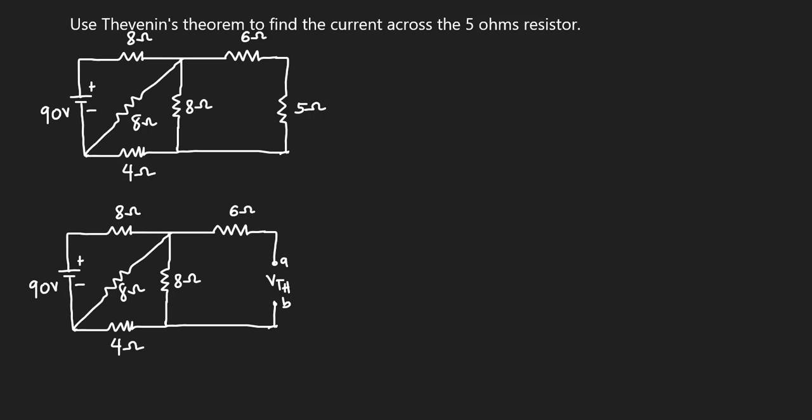Hello, welcome to this lesson. In this video you are going to solve this question on the screen. The question says we should use Thevenin's theorem to find the current across the 5 ohms resistor.